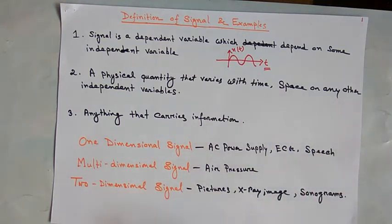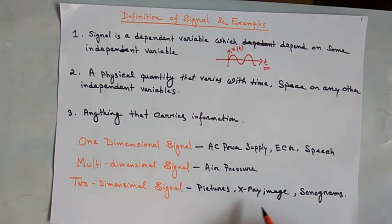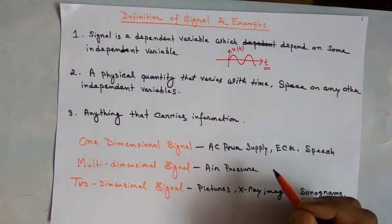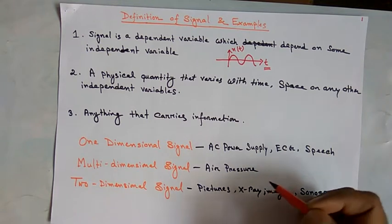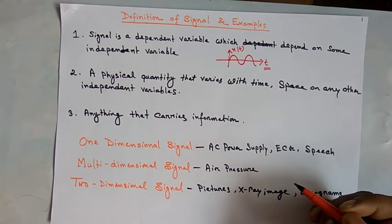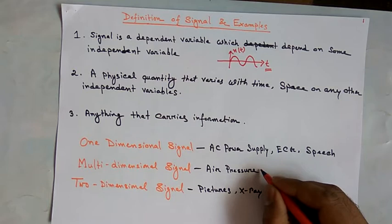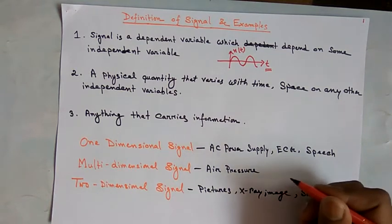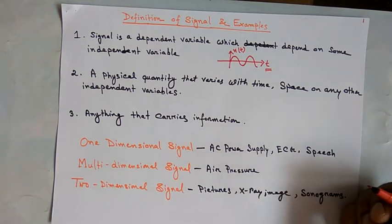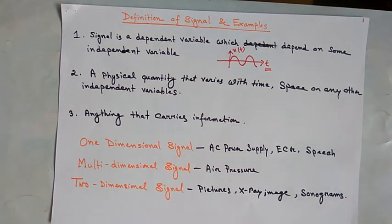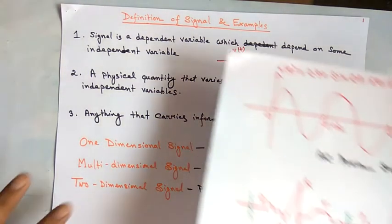For a two-dimensional signal, the number of independent variables will be two — for example, a picture signal or an X-ray image. For a multi-dimensional signal, there are more than two independent variables. For example, air pressure depends on four independent variables: latitude, longitude, elevation, and time. That is why air pressure is a multi-dimensional signal.